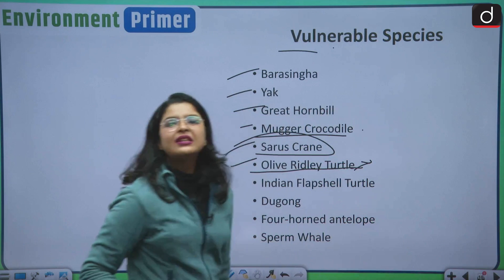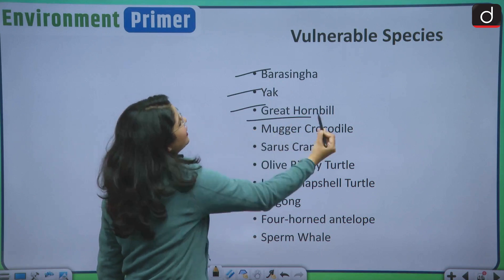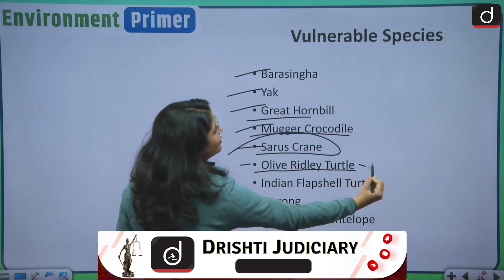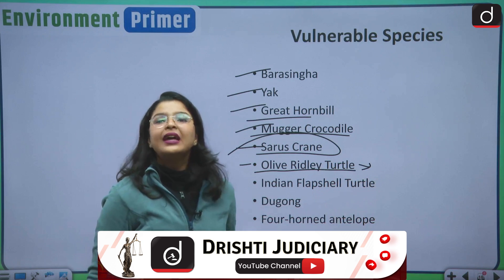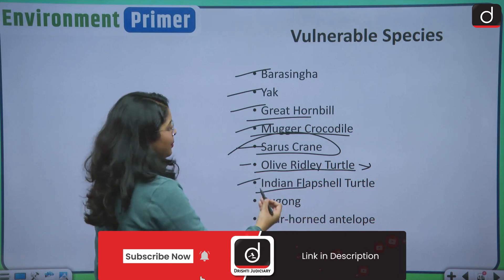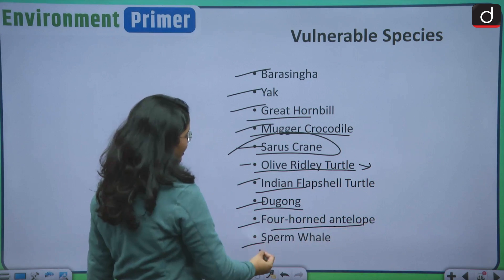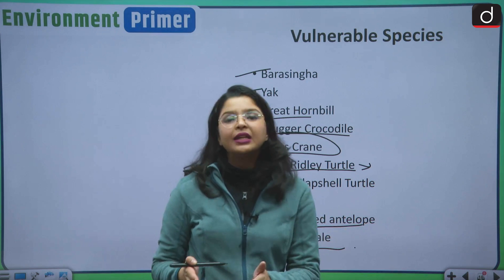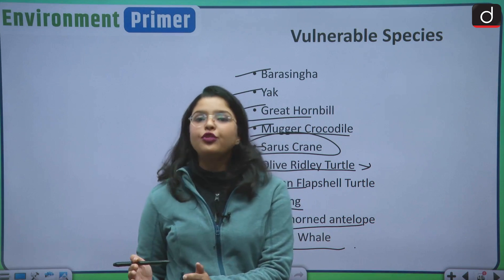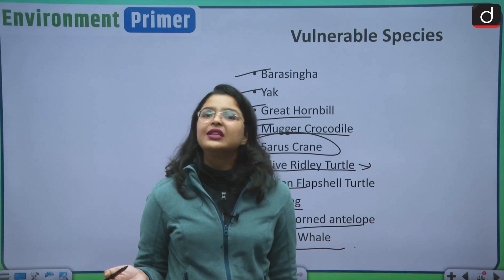What are some of the vulnerable species in India? The first one is the barasingha, then second yak, then the great hornbill, then the mugger crocodile, sarus crane, olive ridley turtle. Kindly let me know of which sports tournament this olive ridley turtle was the mascot. Then, Indian flapshell turtle, then dugong, four-horned antelope and sperm whale. These are some of the vulnerable category of species in India. That means, they are on the verge of becoming endangered and that is why preservation has to be increased for these kind of species.